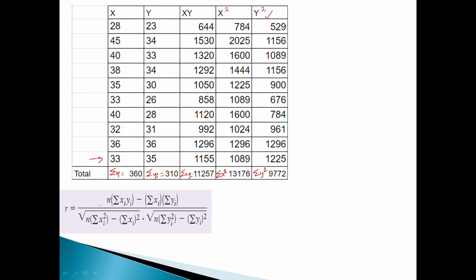Now we substitute into the formula one by one. First is the numerator. The first term is n, and n equals 10. Next term is summation of xi times yi. The value of summation of xy is 11,257. Minus summation of xi times summation of yi: summation of xi is 360, and summation of yi is 310.